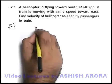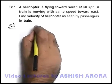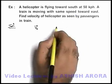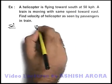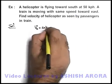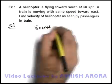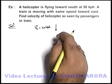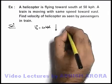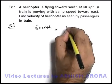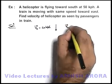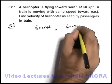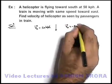The velocity of the helicopter is given as fifty kilometers per hour in the southward direction. If we take south as the negative y-axis, then the velocity of the helicopter vectorially can be written as minus fifty j-cap.